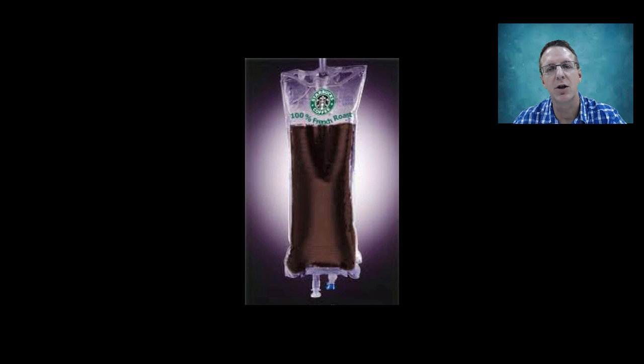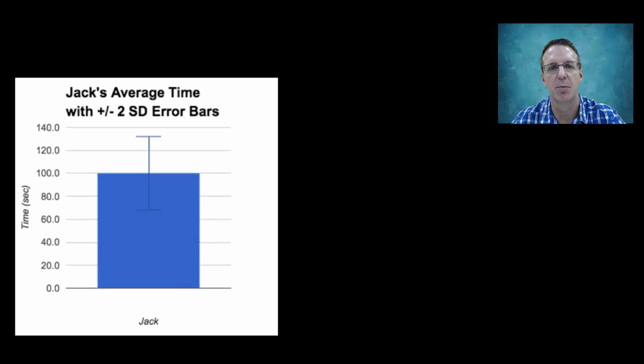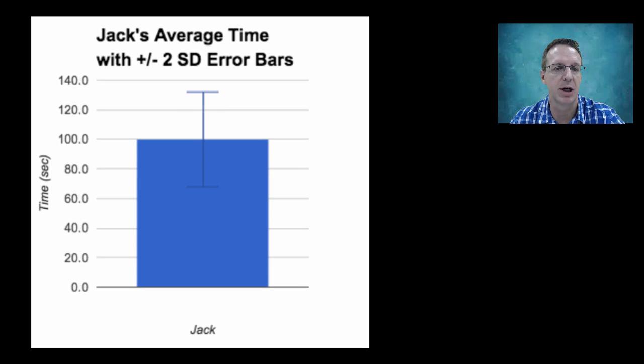Let's go back to Jack's first set of data plotted with error bars representing plus or minus two standard deviations this time. From this graph, we can state that if he were to run up the hill 20 more times, we would expect that 19 or 95% of those times,